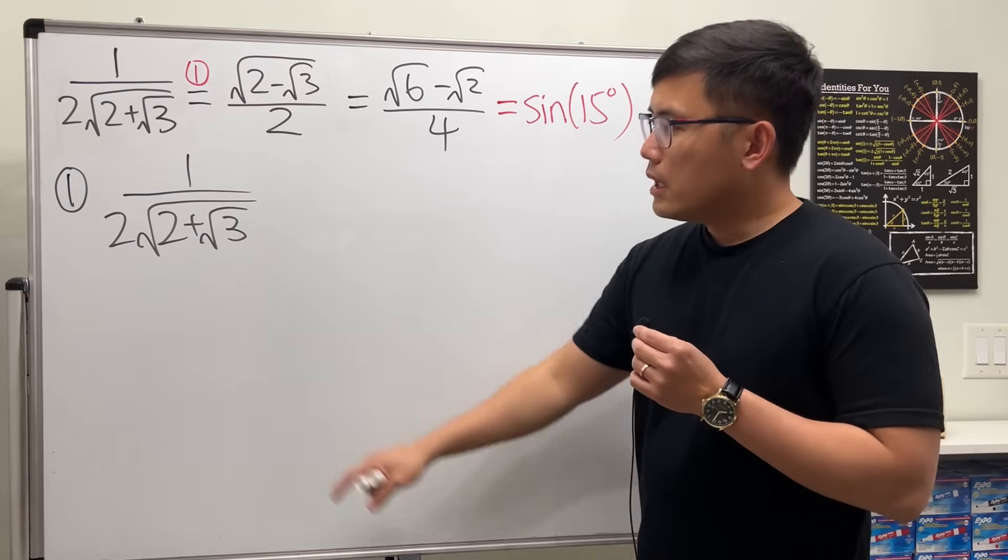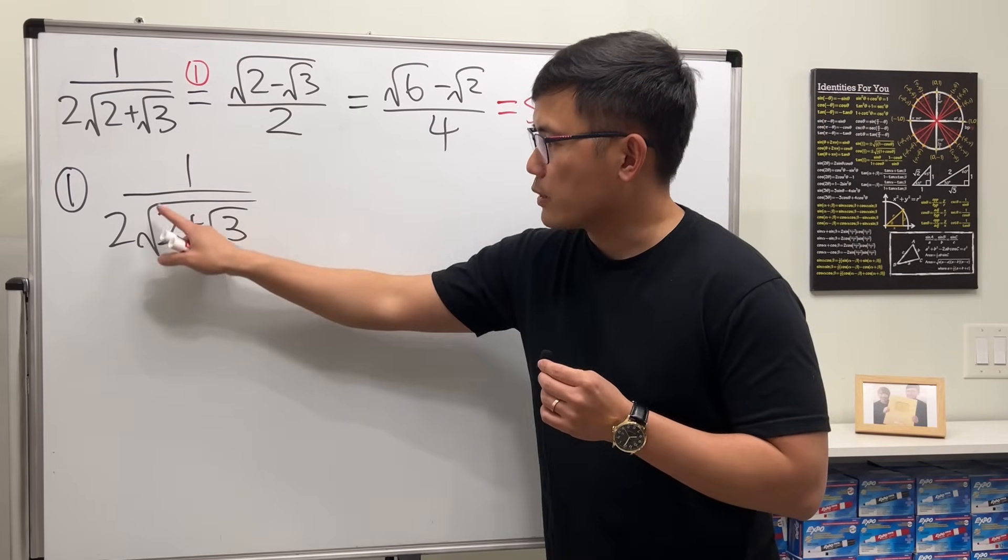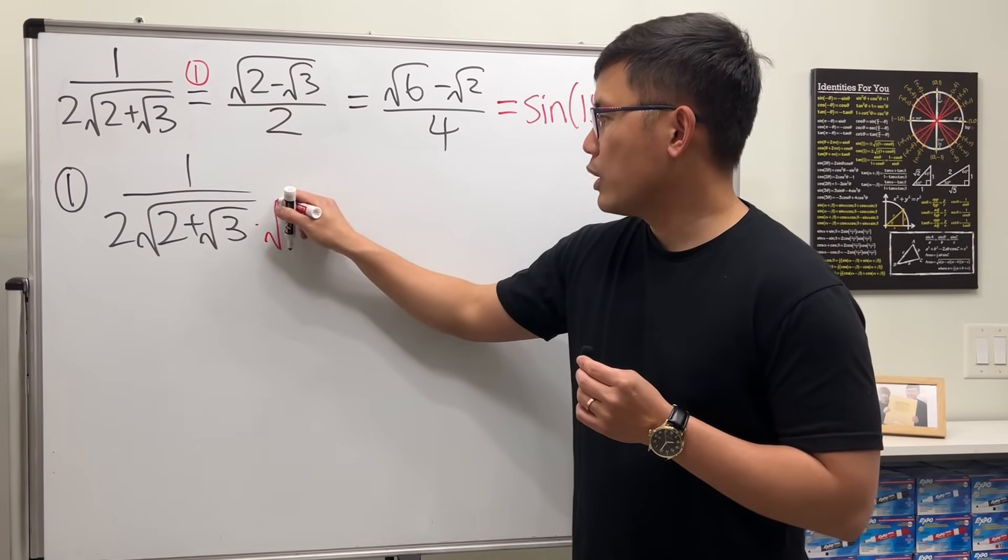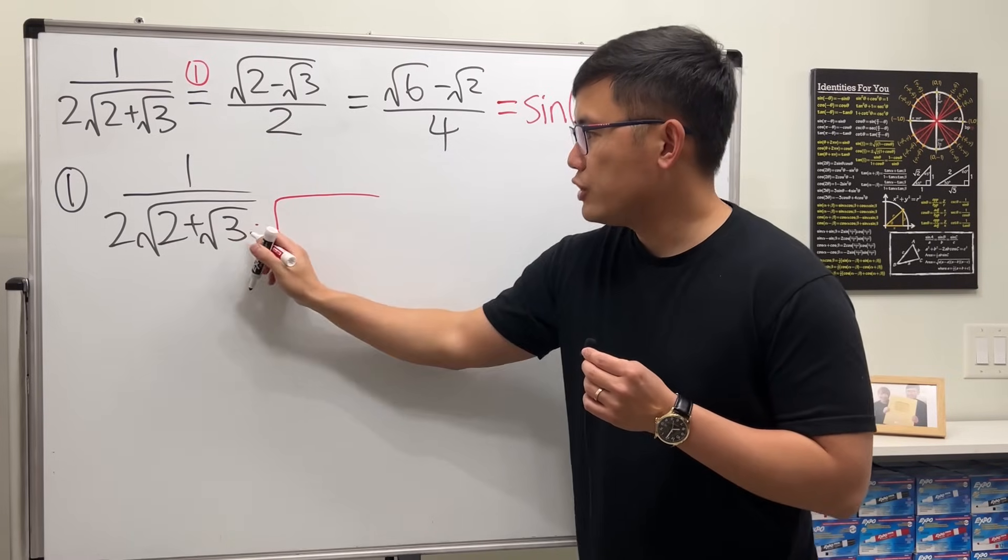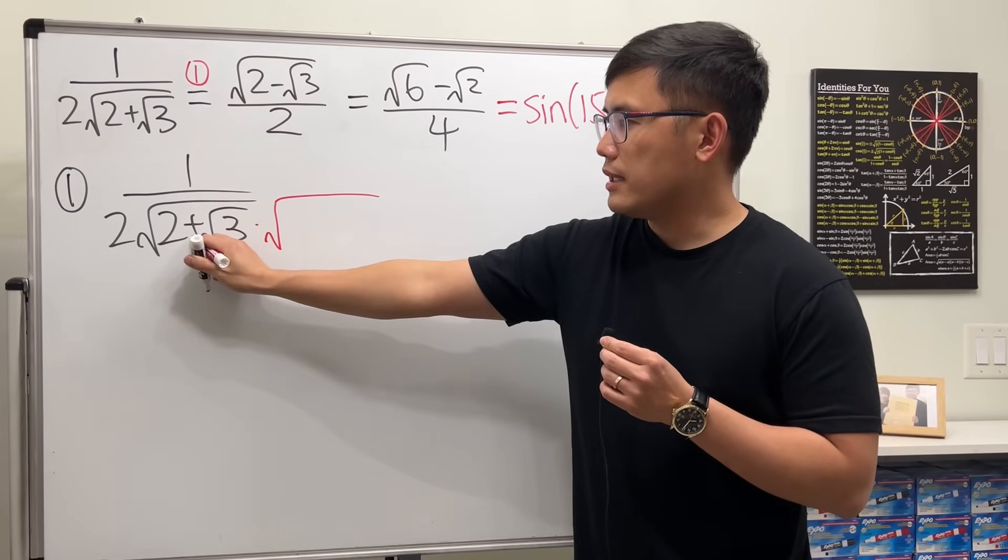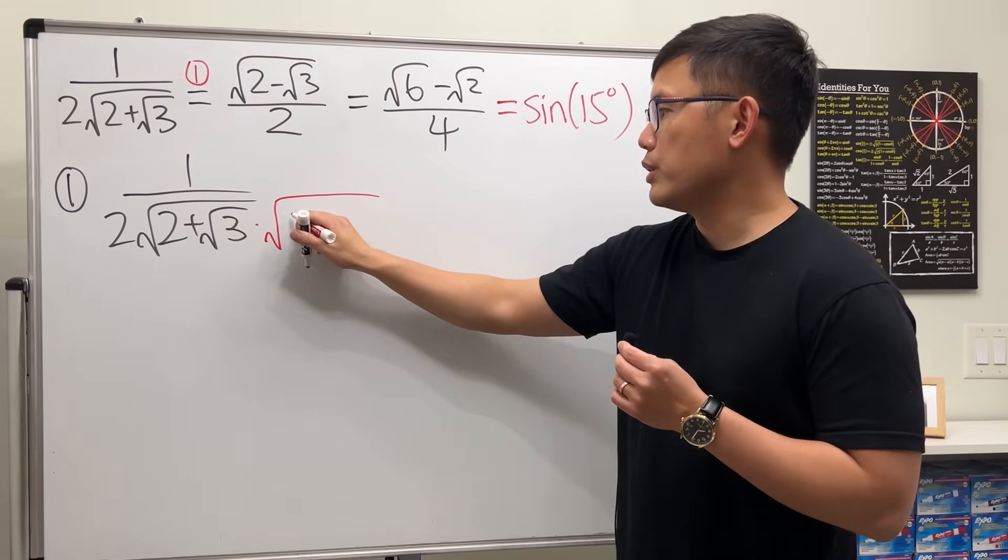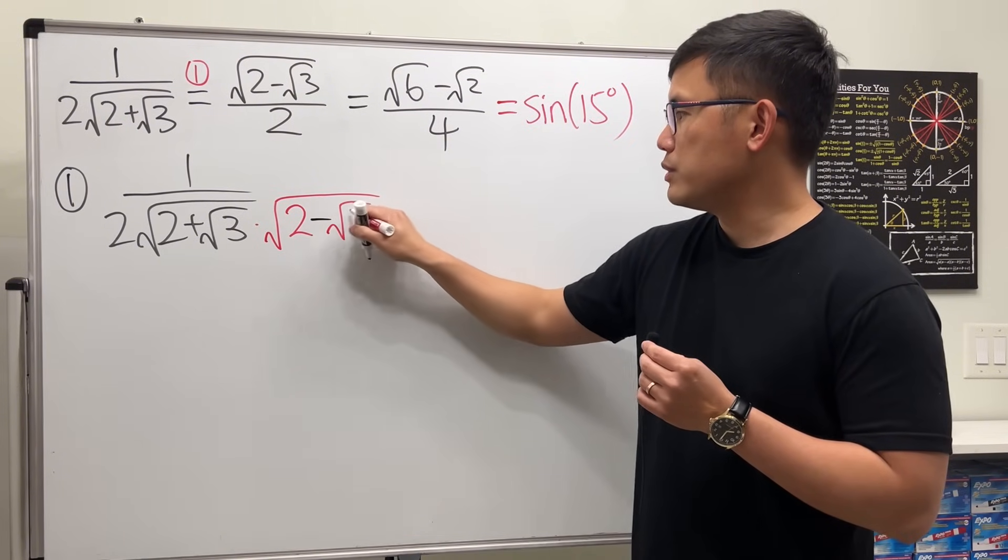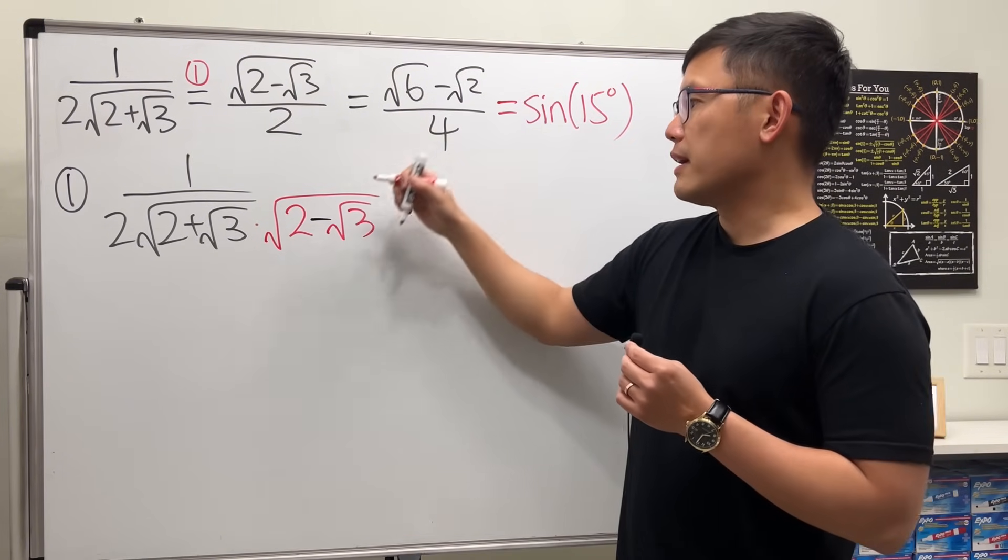But this is inside of this big square root. So we will have to put a big square root first, and then the conjugate of this. The conjugate is just to change the plus to a minus in between. So 2 minus square root of 3. And we'll do the same thing on the top.